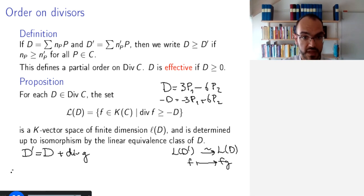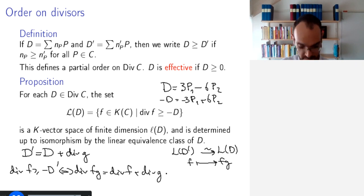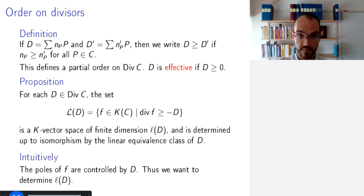Well, if div(F) is greater than or equal to minus D', then this is if and only if div(FG), which is div(F) plus div(G), is greater than or equal to minus D' plus div(G). And this is exactly minus D. So, I get that these two are the same.